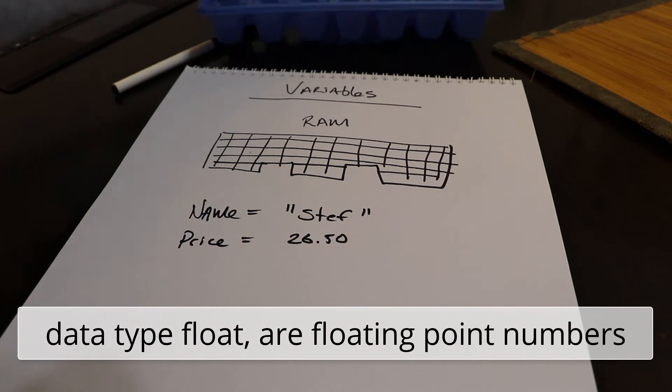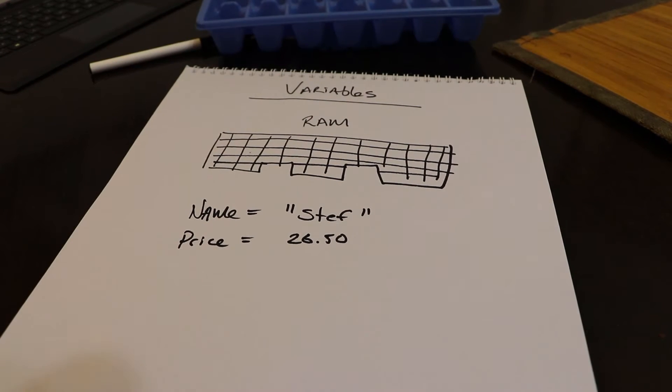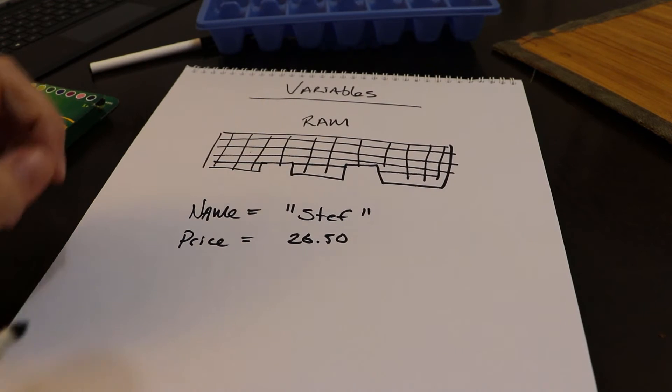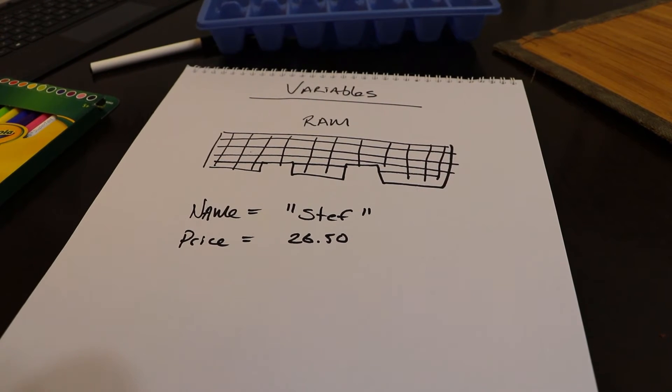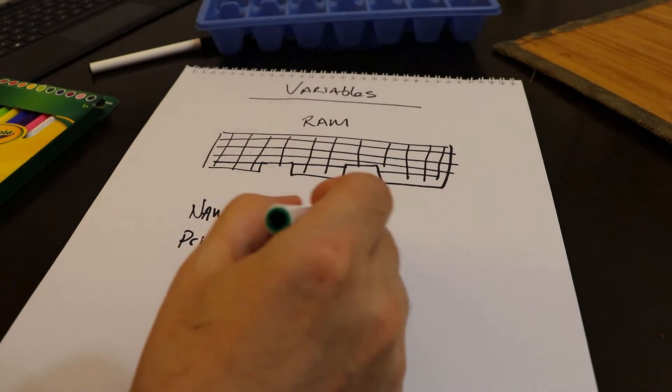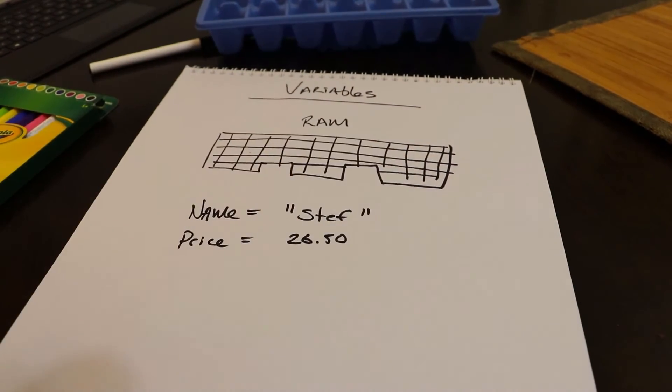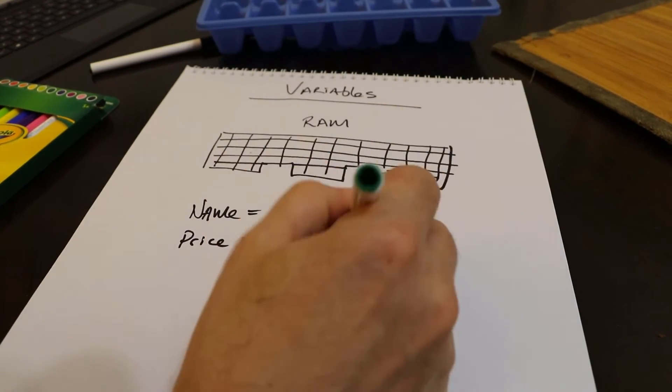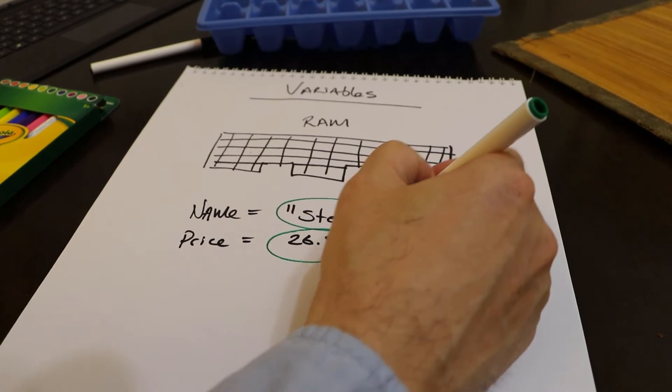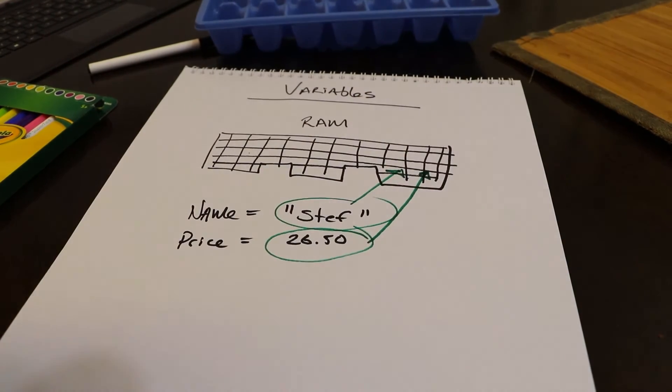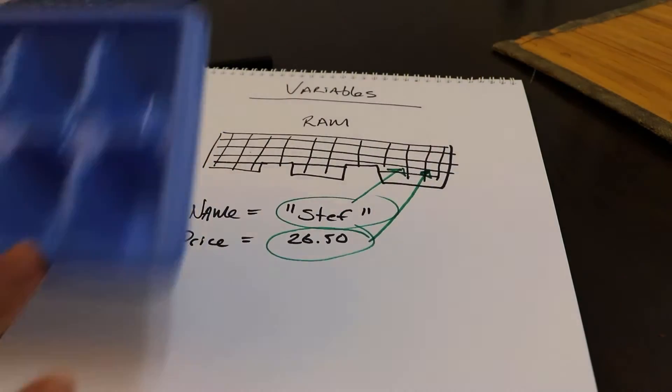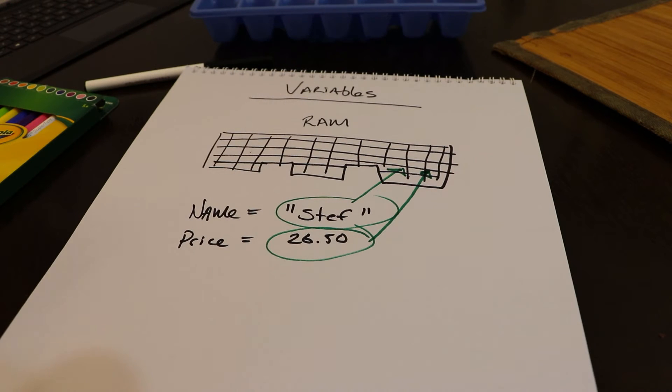So what's going on? When you create a variable, what's actually going on behind the scenes is that Python is storing this information into a spot in RAM. So Stefan is being stored into this spot right here, and 26.50 is being stored into this spot right here. Now we don't know what spot in our RAM Python is storing information, and we don't have to know, we don't have to care.